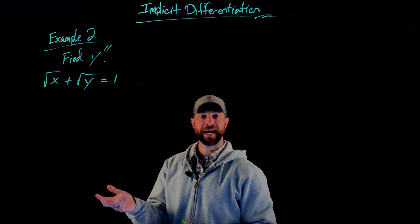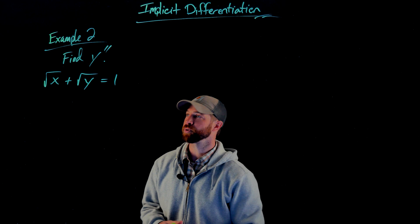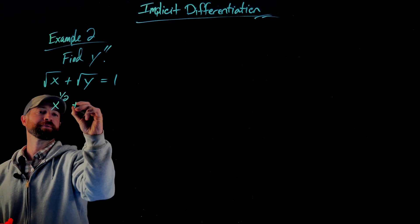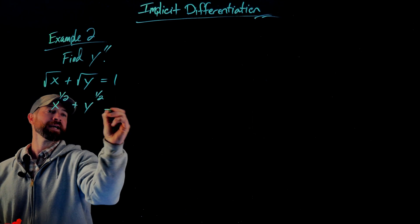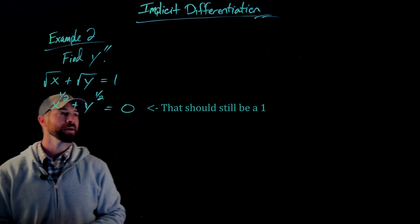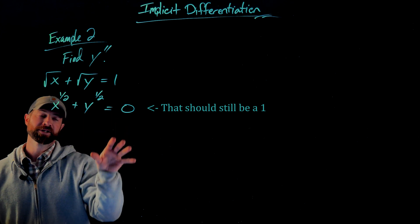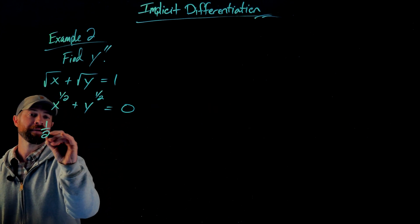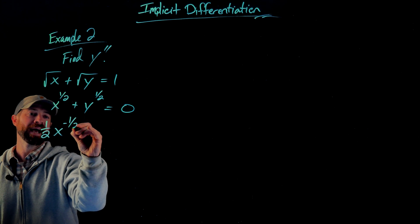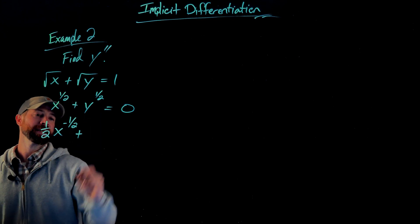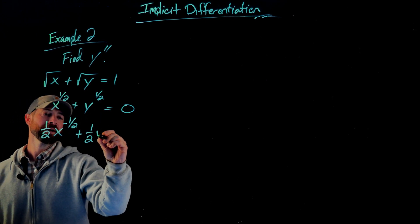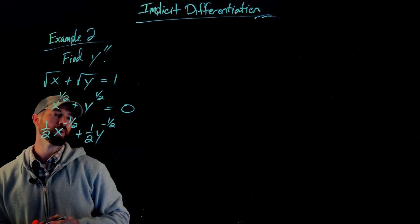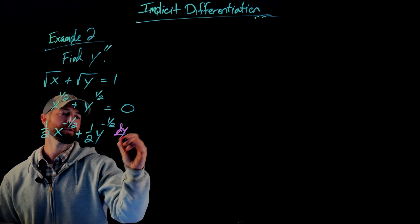What we're going to do is apply the derivative with respect to x to both sides. I'm going to rewrite this as x to the 1/2 plus y to the 1/2 equals 1, and then apply the derivative with respect to x to both sides. When I do that, I will get 1/2 x to the negative 1/2. For the y term, I'll do exactly the same thing, and I'm also going to get a dy/dx because of the chain rule.